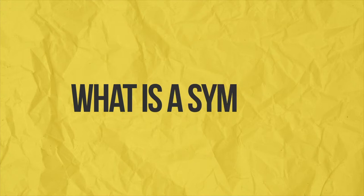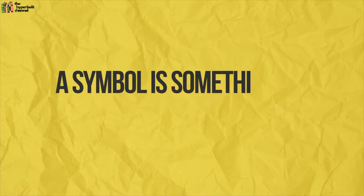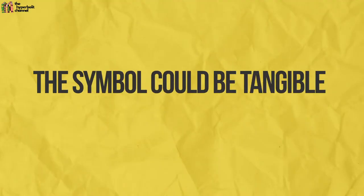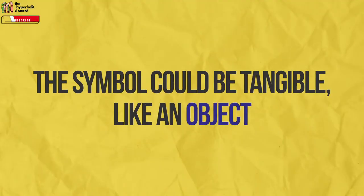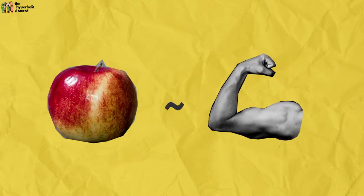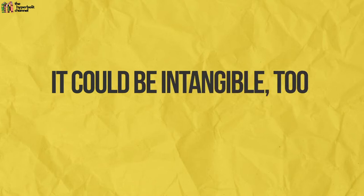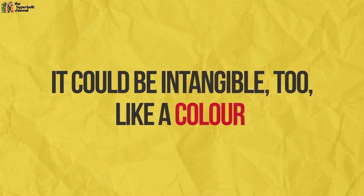What's a symbol? Simply put, a symbol is something we use to represent an idea. This something could be tangible, like an object — for example, an apple could represent health. Or it could be something intangible, like a colour — for instance, red may represent passion.